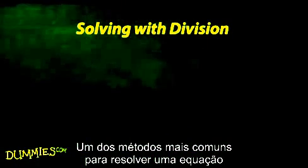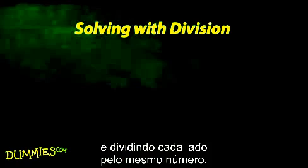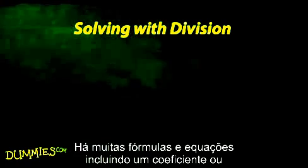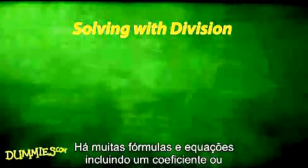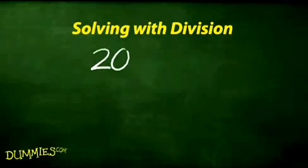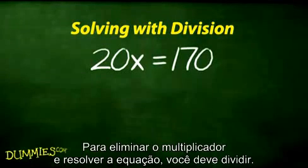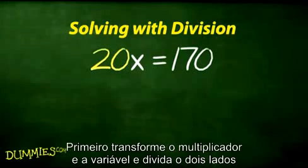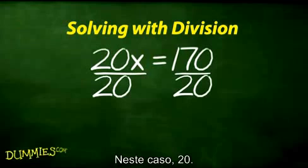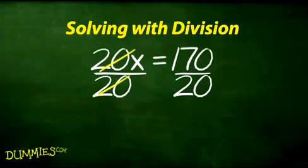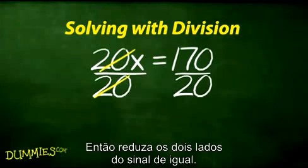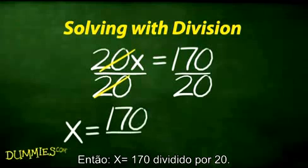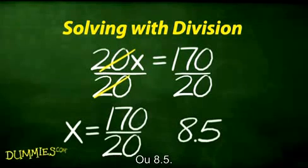One of the most basic methods for solving equations is to divide each side by the same number. Many formulas and equations include a coefficient or multiplier with the variable. To get rid of the multiplier and solve for x, determine the multiplier and divide both sides by it — in this case 20 — giving x equals 170 over 20, or 8.5.